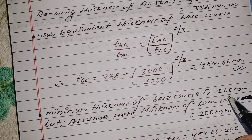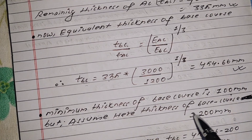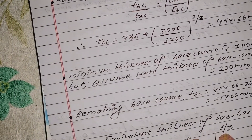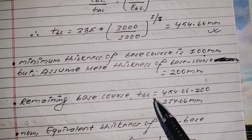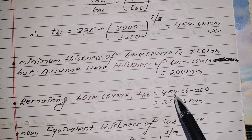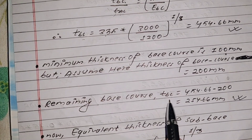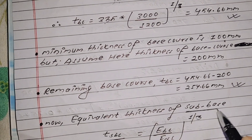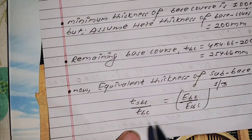The calculated base course thickness comes out to 454.66 mm. The minimum thickness of base course is 100 mm. We assume the base course thickness to be 200 mm. The remaining base course thickness is 454.66 − 200 = 254.66 mm, which is then assigned to the sub-base course.